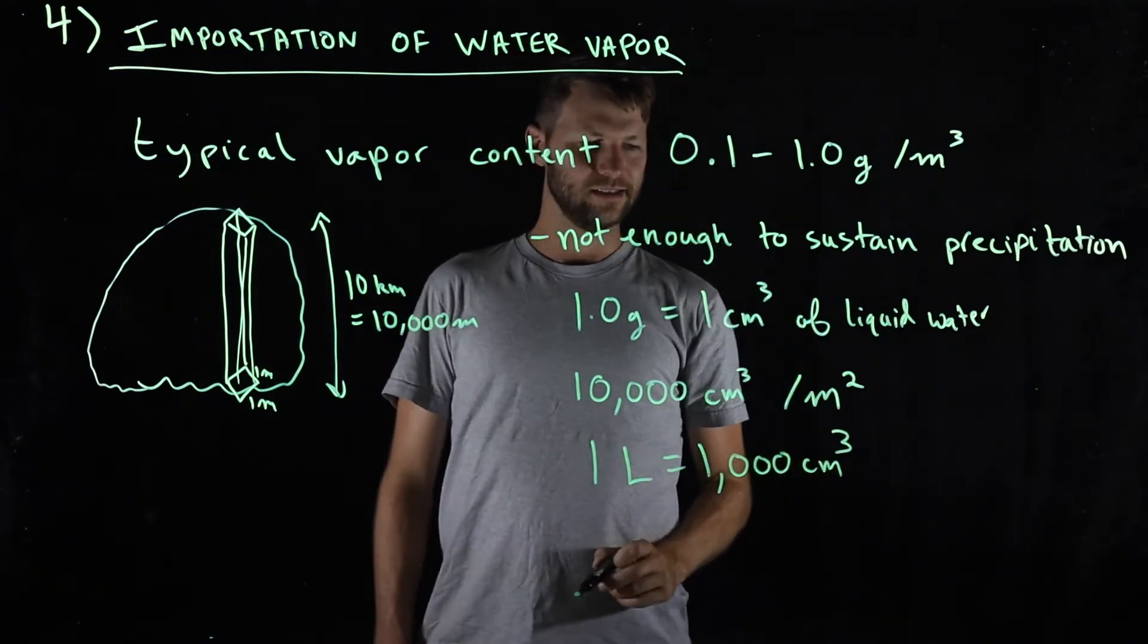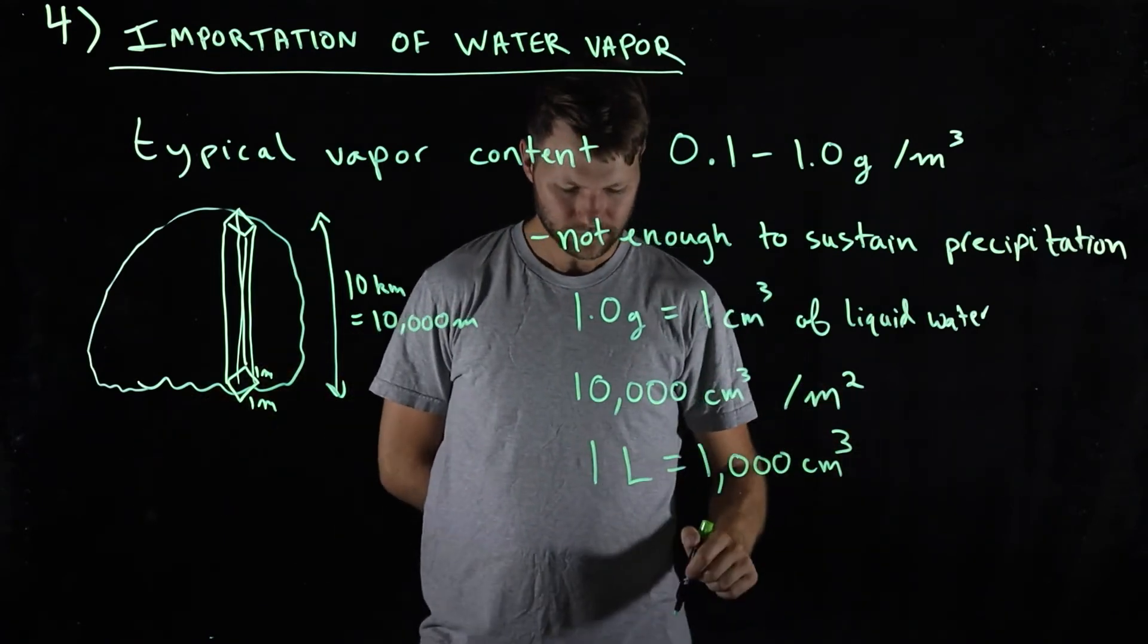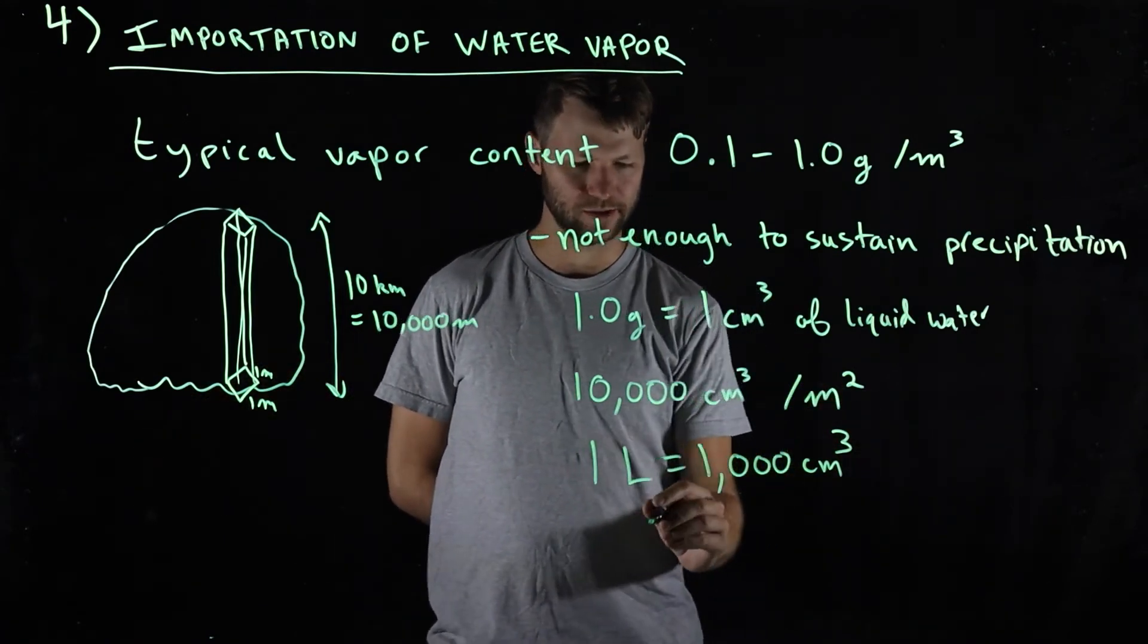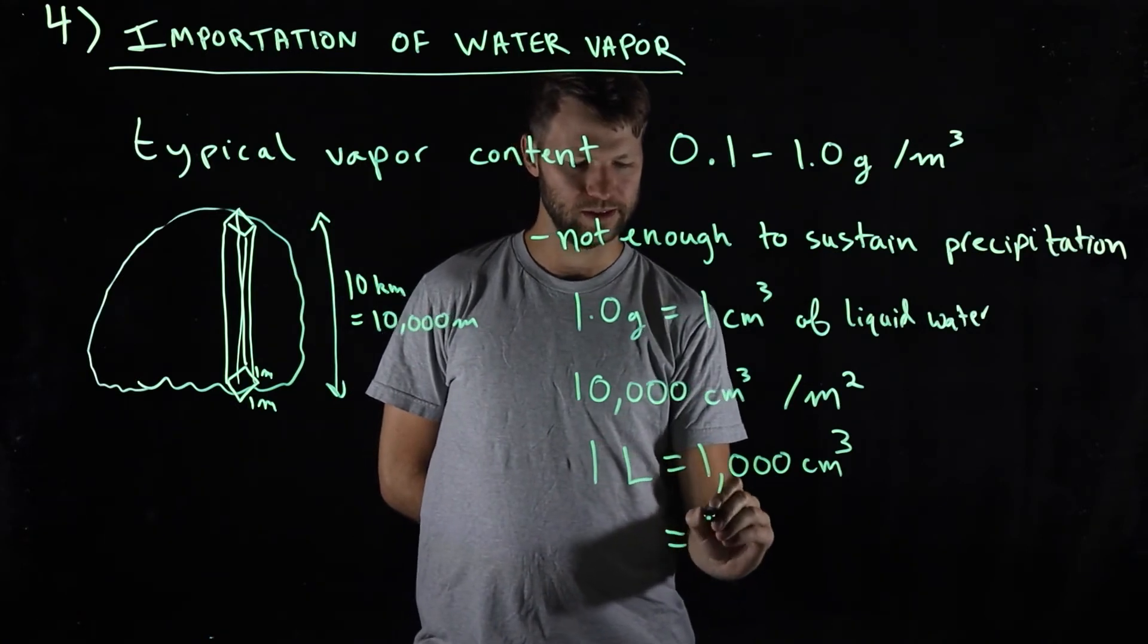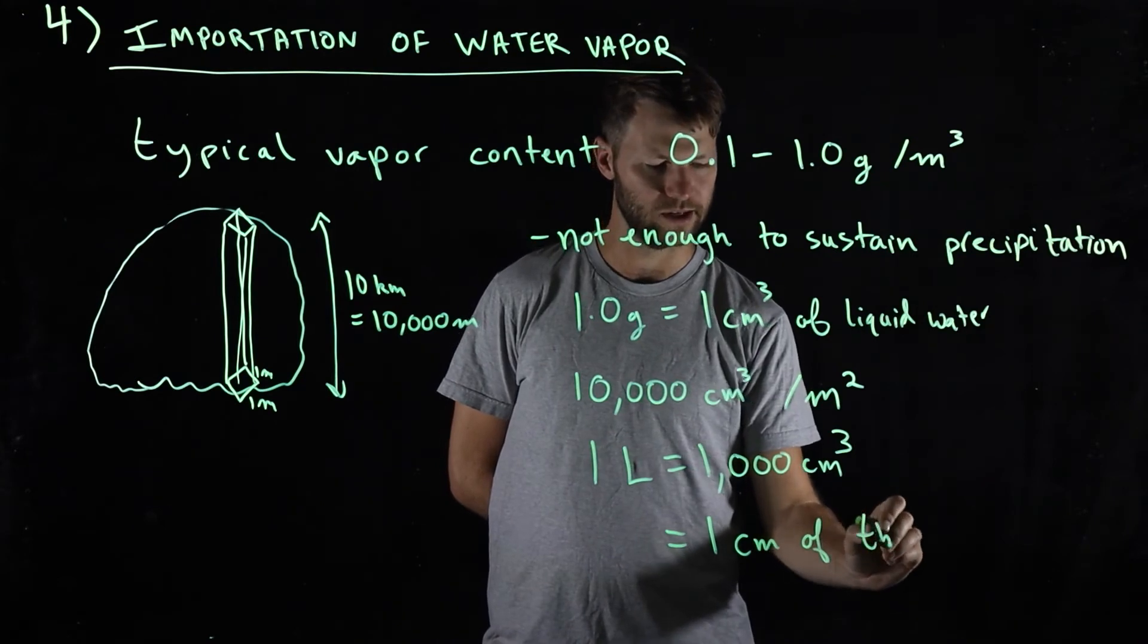And so this is about 10 liters of water spread over a square meter, and 10 liters of water spread over a square meter is only equal to 1 centimeter of thickness of water.